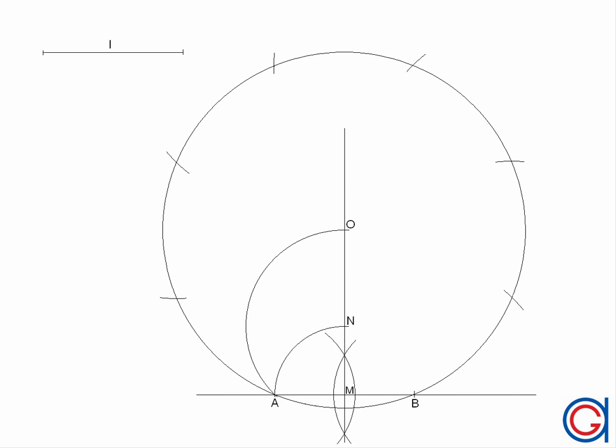Now we have the 8 vertices of our octagon which we will name A, B, C, D, E, F, G and H. And the only thing left to do is to join these vertices.